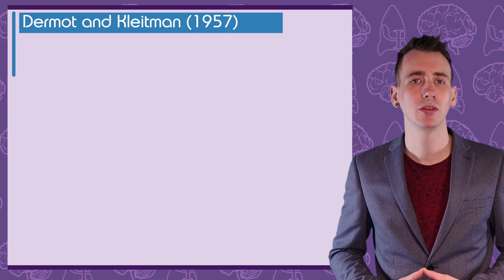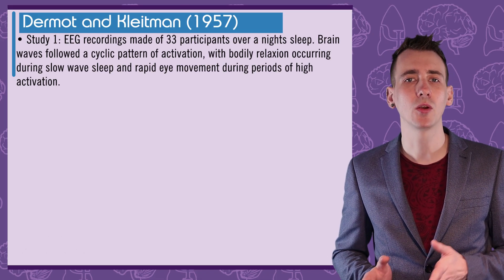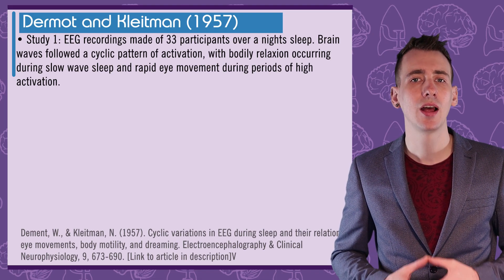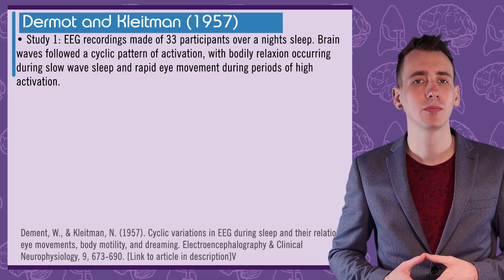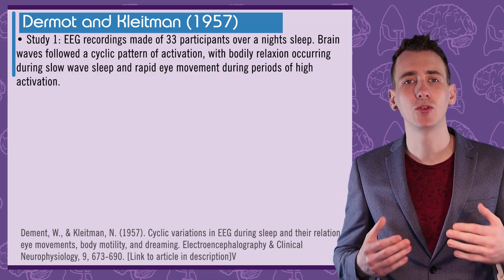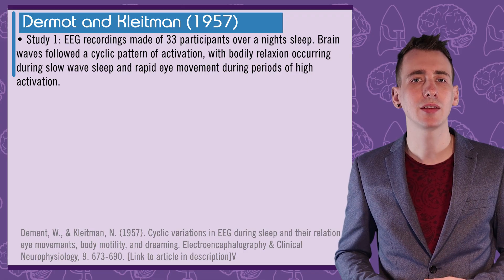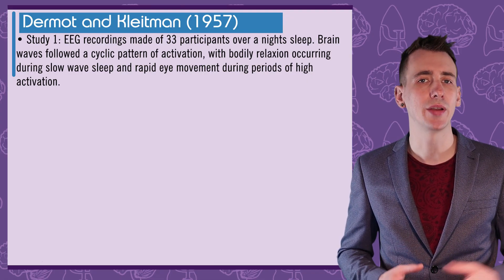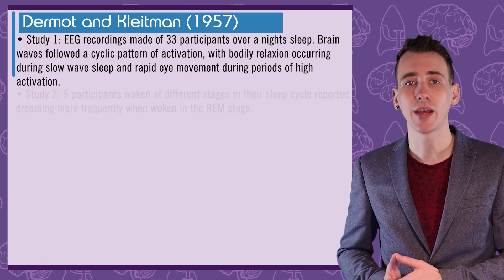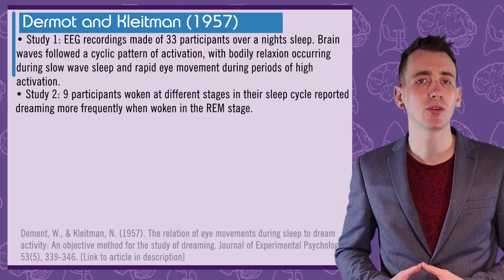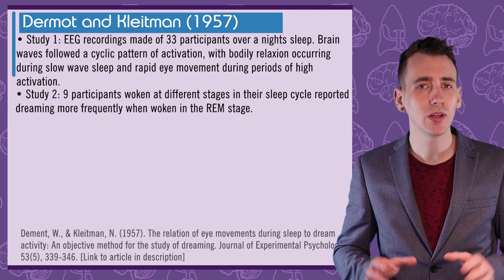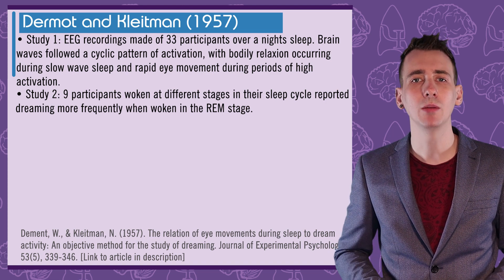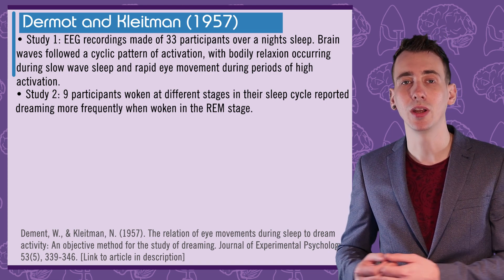Dement and Kleitman published two studies in 1957. One with 33 adults showed clearly, using EEG recordings, that there are regular sleep cycles over the course of a night's sleep, showing peaks of brain activity at the same time as rapid eye movement. The second paper with 9 participants demonstrated REM sleep was associated with dreaming, by showing that recall of dreams was most vivid when participants were woken in the REM stage.